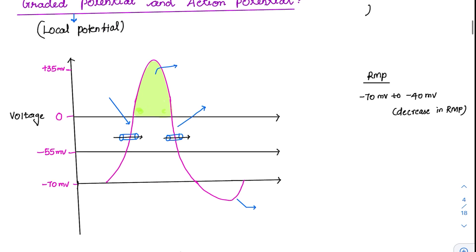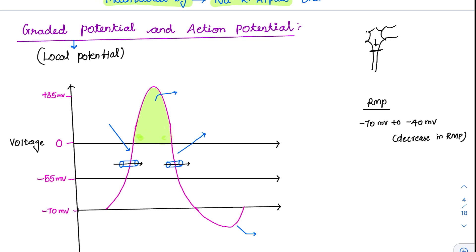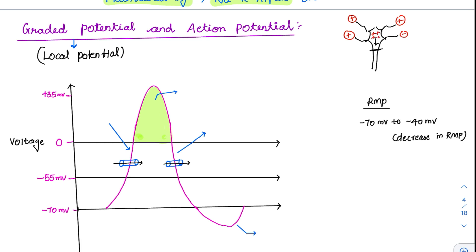Whenever we consider a neuron, there is the soma and then the axon. The potential has to reach at least the initial segment of the axon so that an action potential can be generated. This information is received by many dendrites — it can be a positive excitatory postsynaptic potential or a negative impulse. All of them combine to form an end potential. If the end potential reaches threshold, then only an action potential is created. Whatever potential is generated over this region is the graded potential.